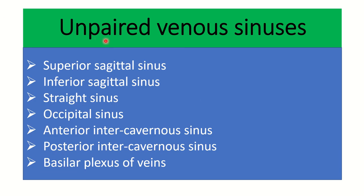Here we can see the unpaired venous sinuses. Their names are: the superior sagittal sinus, inferior sagittal sinus, straight sinus, occipital sinus, anterior intercavernous sinus, posterior intercavernous sinus, and basilar plexus of veins. These are the unpaired dural venous sinuses and we have to remember them.